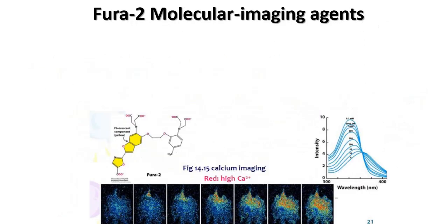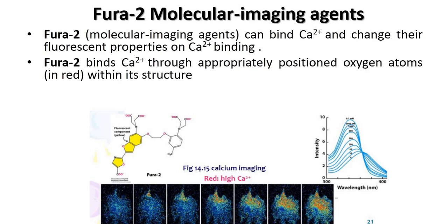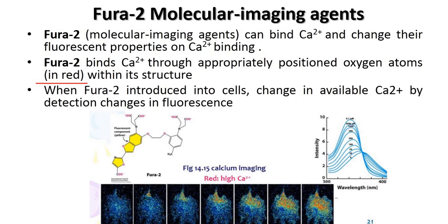FURA2 is a molecular imaging agent — a dye used to study intracellular calcium changes. FURA2 binds with Ca2+ and changes its fluorescent properties. It combines with calcium through appropriately positioned oxygen atoms shown in red within its structure. When FURA2 is introduced into the cell, visible changes in calcium concentration are detected through changes in fluorescence.